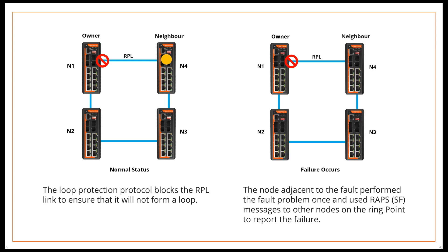If there is a failure between node 2 and node 3, the nodes adjacent to the fault detect the fault and use RAPS messages to report the failure to other nodes on the ring. The RAPS message triggers the RPL Owner node to open the RPL port, and also triggers all nodes to update their MAC table entries. The node then enters the protection state.